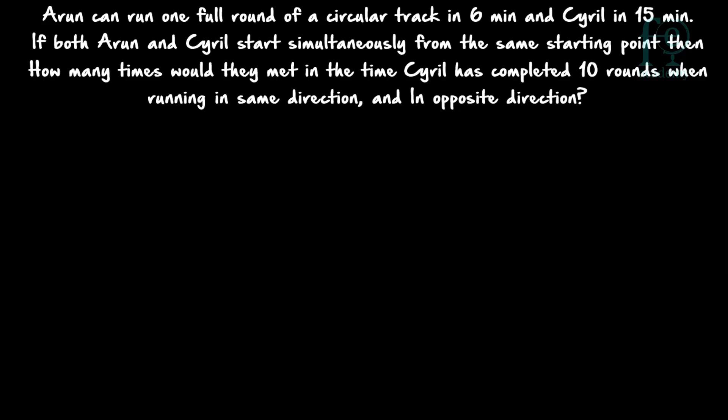Welcome to today's class. Today's question: Arun can run one full round of a circular track in 6 minutes and Cyril in 15 minutes. If both Arun and Cyril start simultaneously from the same starting point, how many times would they meet by the time Cyril has completed 10 rounds, when running in the same direction and in the opposite direction?